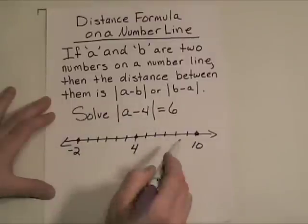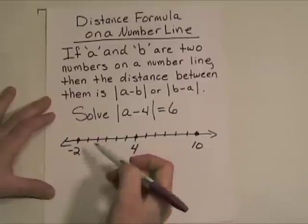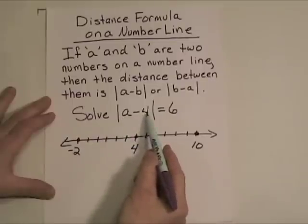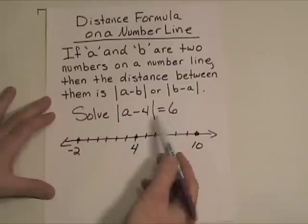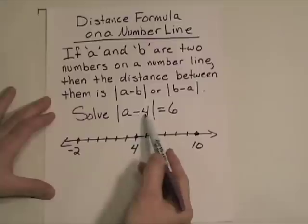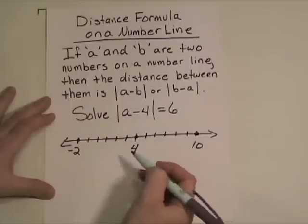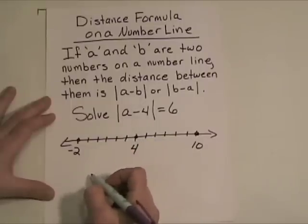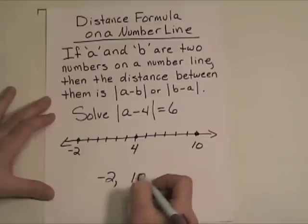There are two possible solutions to this little expression. Negative two take away four would give us negative six, and the absolute value of negative six is positive six. And ten take away four would give you six, and the absolute value of six is positive six. So our two answers are negative two and ten.